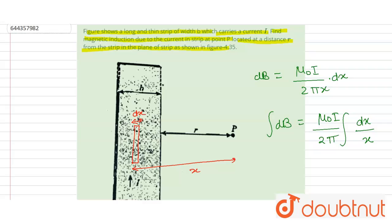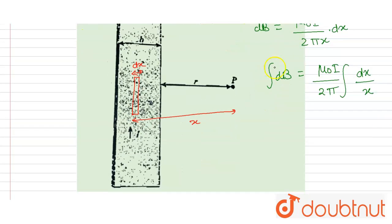dx by x, and limits will be... this distance is r, this distance is r, and this distance is r, so it will be from r to r plus b.